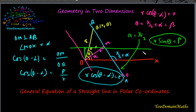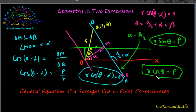If the straight line is perpendicular to the initial line, then alpha equal to 0, and putting these values in the equation we get r·cos(theta) equal to p. That is the equation of a straight line which is perpendicular to the initial line. Thank you.